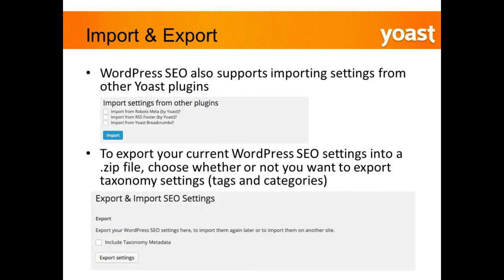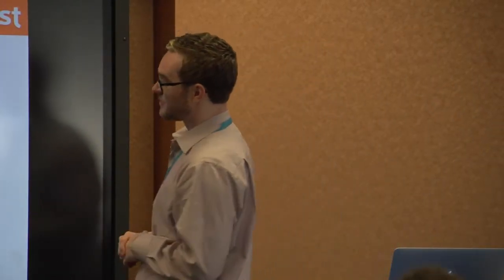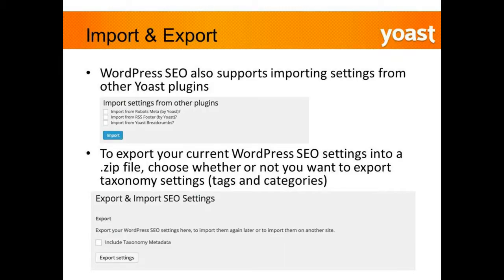If you've been using another plugin and you're not too sure about SEO, I would probably just start from scratch. You can also import settings from other Yoast plugins — the robots meta plugin, RSS Twitter plugin, or the Yoast breadcrumbs plugin. You can export your current WordPress SEO settings — for example, if you're moving your blog onto a staging server for development. Go ahead and include taxonomy data, so it pulls your categories, tags, and all that good stuff.